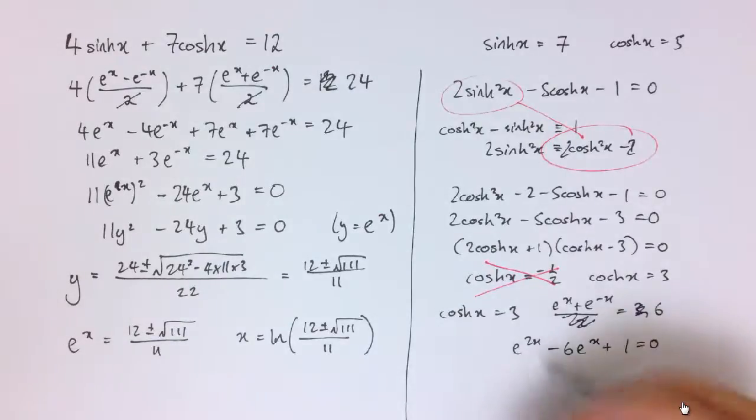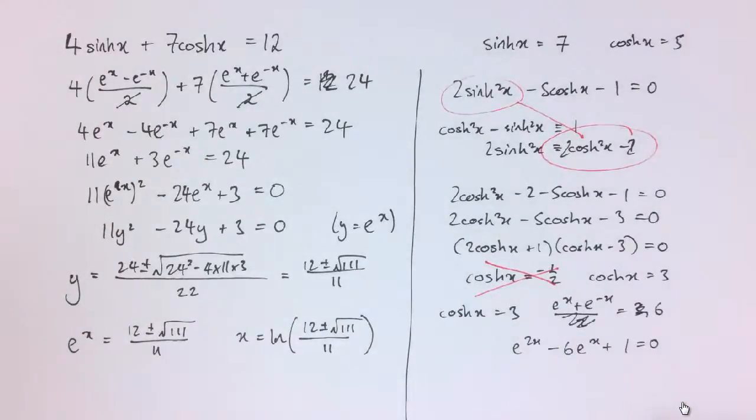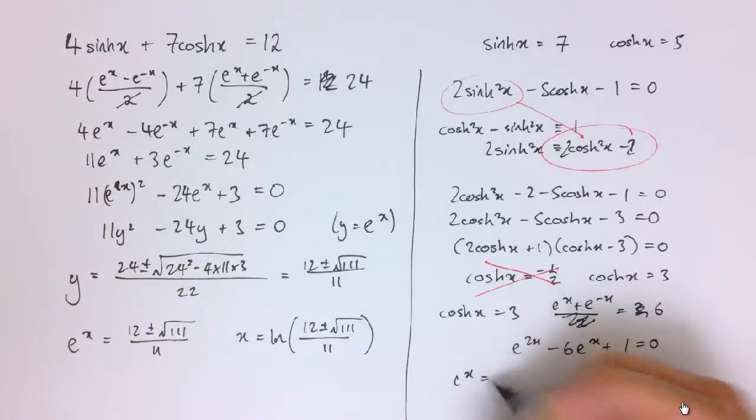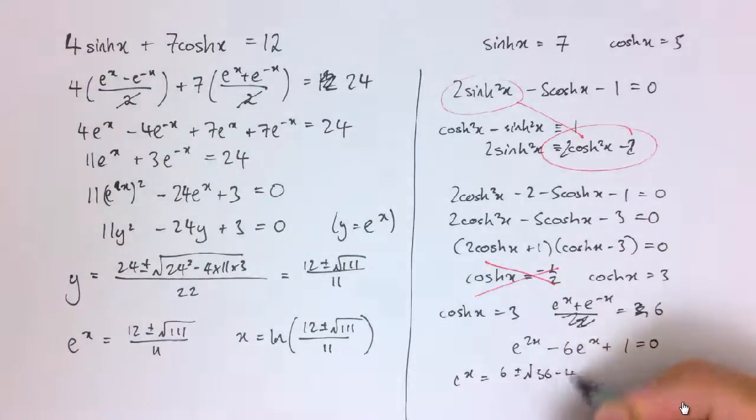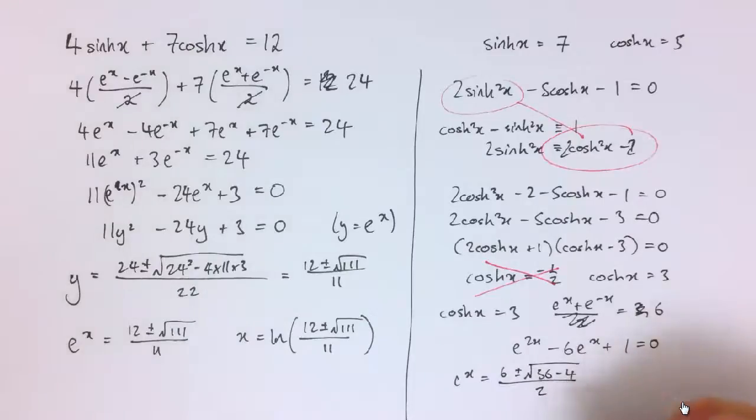And now again this is a quadratic equation in e^x. If you've done a bit more on this you can just use the formula for inverting cosh as well. But for now it's a quadratic equation so we've got e^x equals 6 plus or minus the square root of 36 minus 4, all divided by 2, which simplifies down to 3 plus or minus the square root of 2.